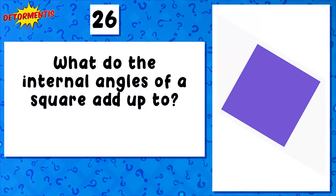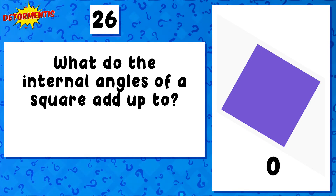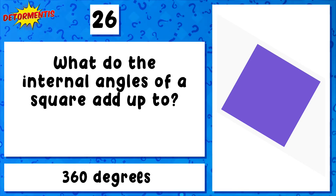Question 26. What do the internal angles of a square add up to? Three hundred and sixty degrees.